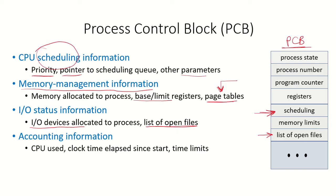Apart from this, the process control block may have accounting information — that means how much CPU it has used, what has been the clock time elapsed since it started, whether there is a time limit assigned to this process, and some other information as well. Depending upon the system implementation, there may be other parameters or additional information stored in this process control block.